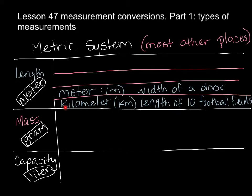A kilometer — kilo means a thousand — so a kilometer is 1,000 meters, abbreviated KM. If I laid down a meter stick and put down 1,000 of them, it would stretch out a long way — about the length of 10 football fields. That's a long way.